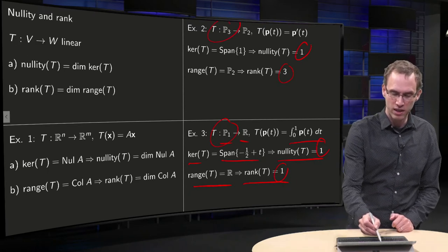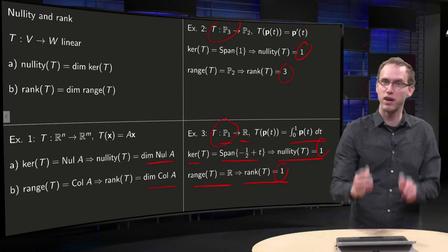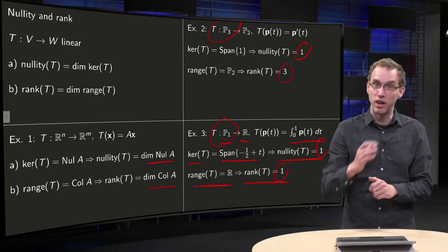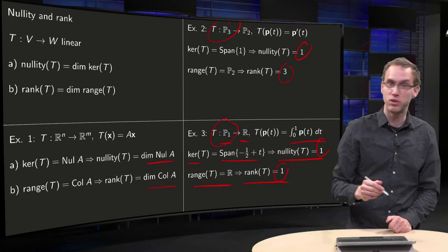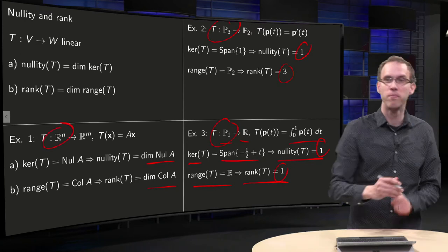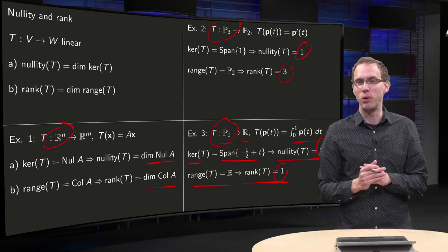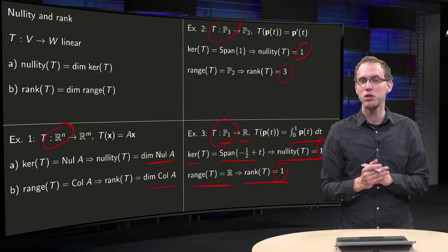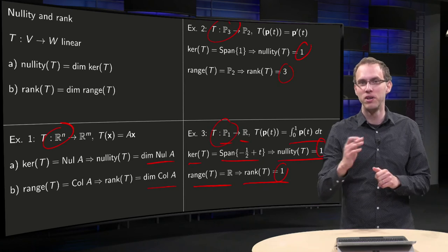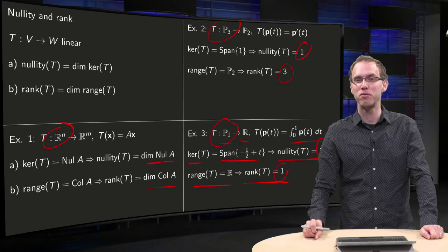If you add here the number of pivots and number of free variables, then you get the number of columns of the matrix, which is the dimension of the domain. Would it be a coincidence or would this always be true? That's a question for now, open for the description.